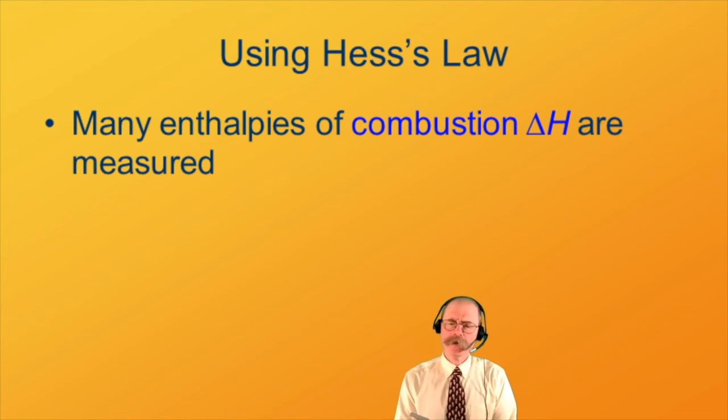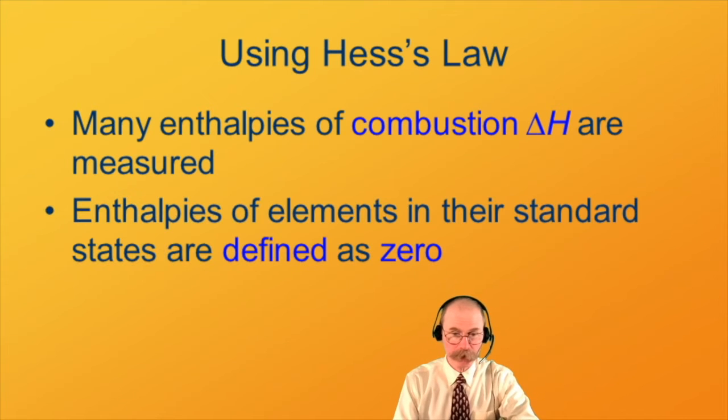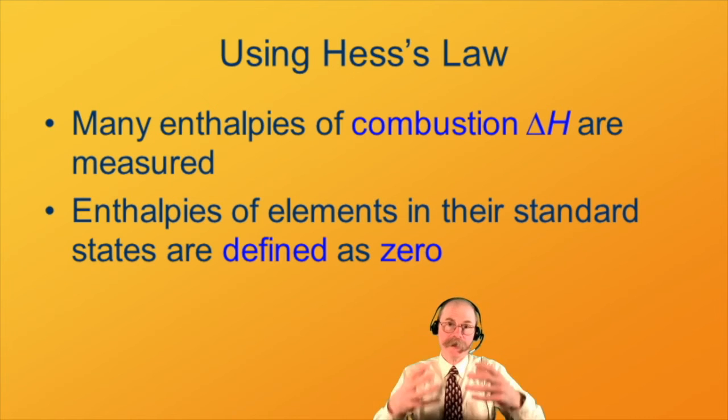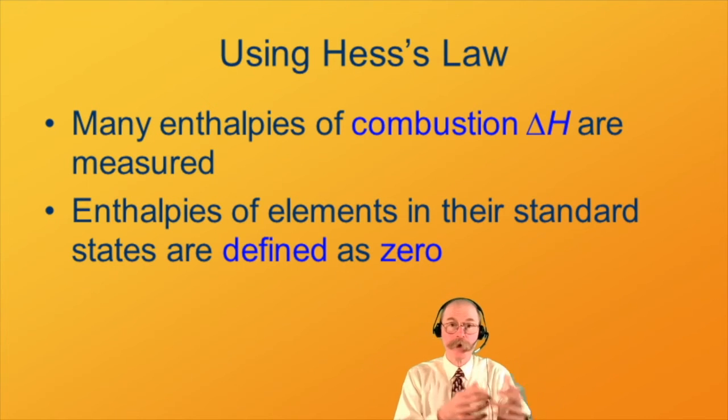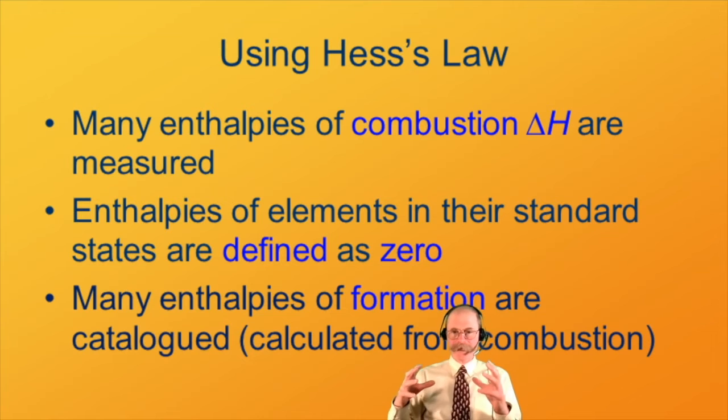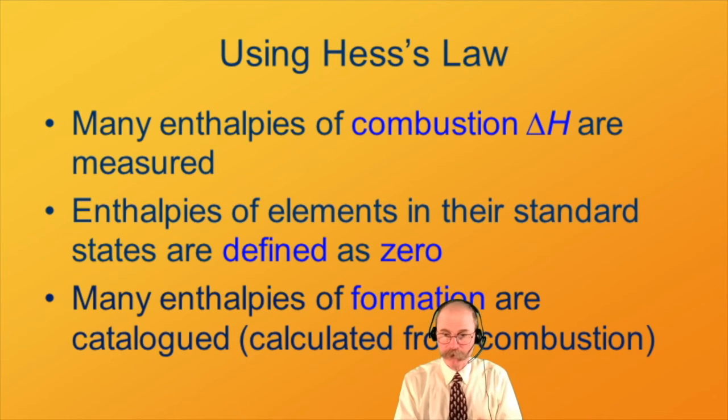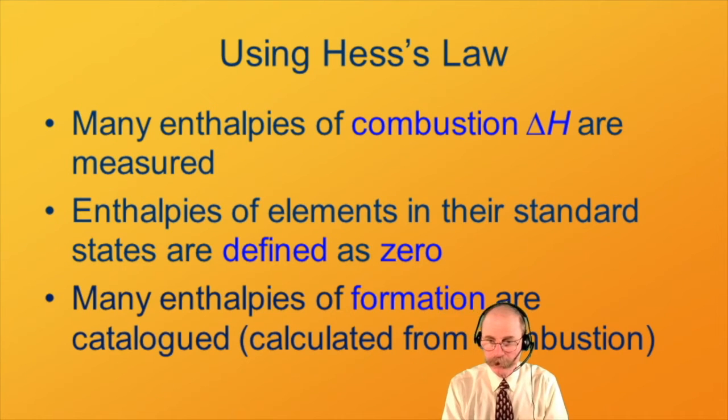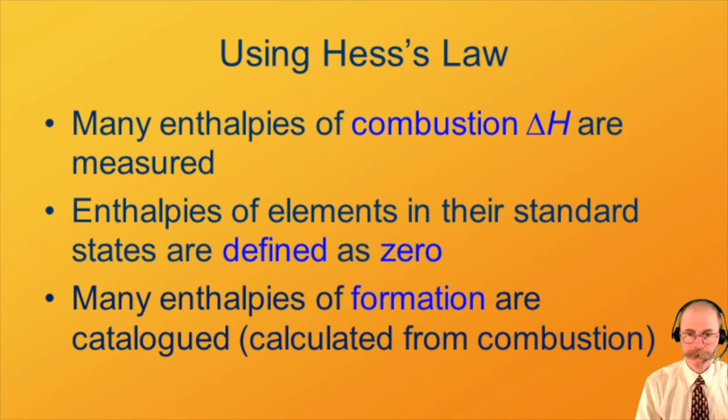So this gave an example of finding the heat of reaction based on two combustion reactions. And it turns out that it's easy to measure the enthalpies of combustion. You just burn something in a calorimeter and see how much heat is evolved. Then we can cleverly combine those reactions to give us the enthalpies of other reactions. Another cute trick that we use to determine arbitrary reaction enthalpies is to define all elements in their standard states as zero. From that, we can determine enthalpies of formation.